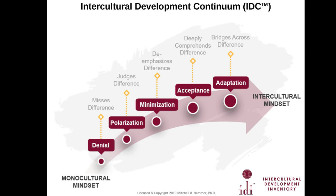We can conclude how someone in denial might operate in team meetings, team building, or working with different groups to meet project goals. The next developmental orientation is Polarization, which is still a monocultural mindset. It stems from a judgmental orientation — making sense of culture based on an us-versus-them mentality, appearing overly critical toward cultural differences, and possibly feeling under attack from other cultures.